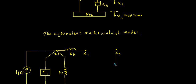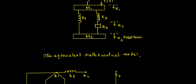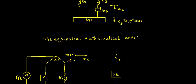Let me sketch mass m2 and extend this till the ground. I will connect this to ground and call this as mass m2. Between x2 and x3 there is the friction b3, so I am going to consider the damper or dashpot. This I am going to call it as b3.